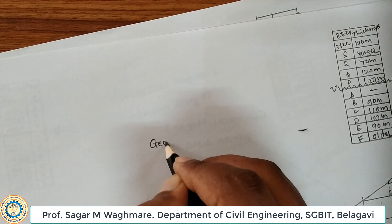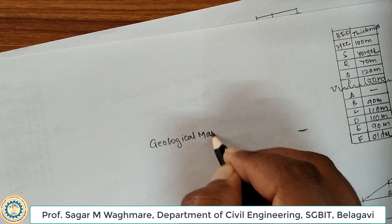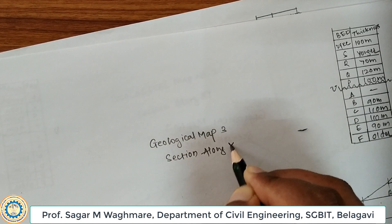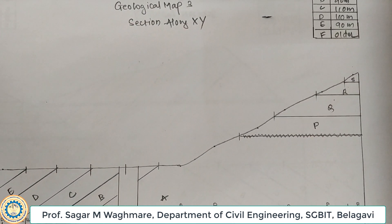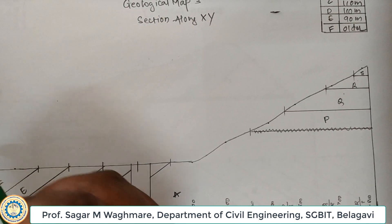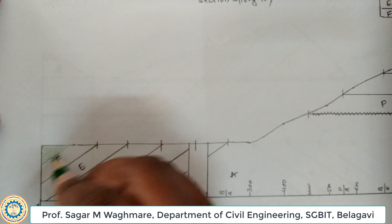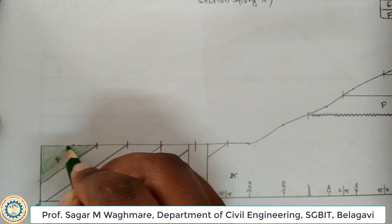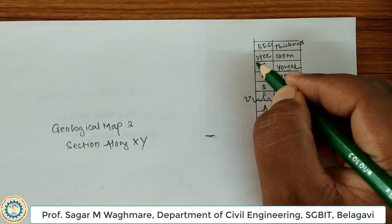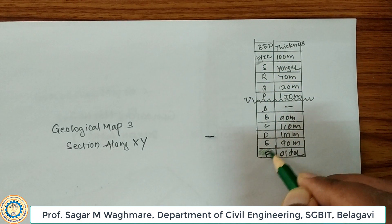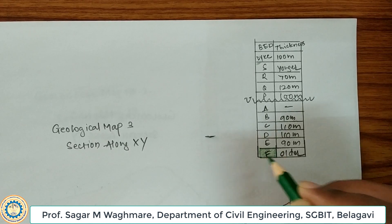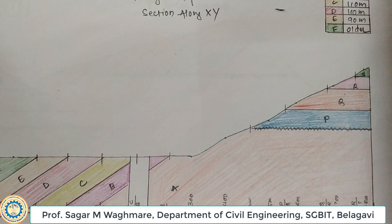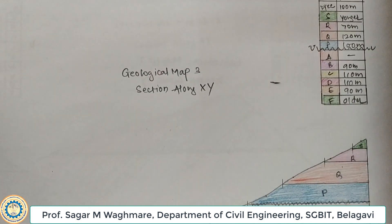You can write down here as Geological Map 3, Section along X and Y. Then you can go for the coloring. Whatever color you give to a formation here, you should give the same color in the index as well. For example, F can be colored green. This is how you can complete all the coloring. Once you complete, your map will look like this. This is how you can complete map number 3. Thank you.